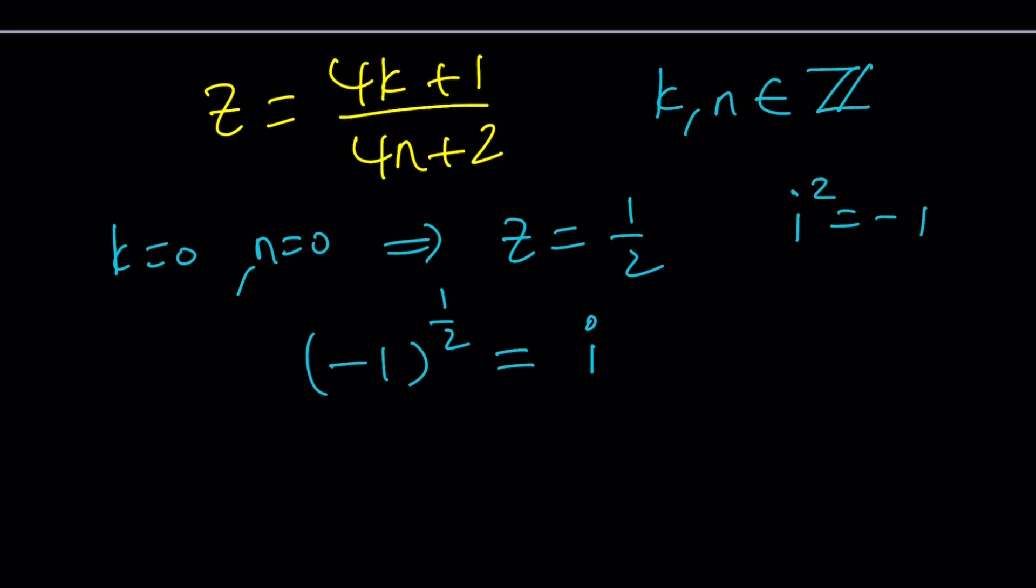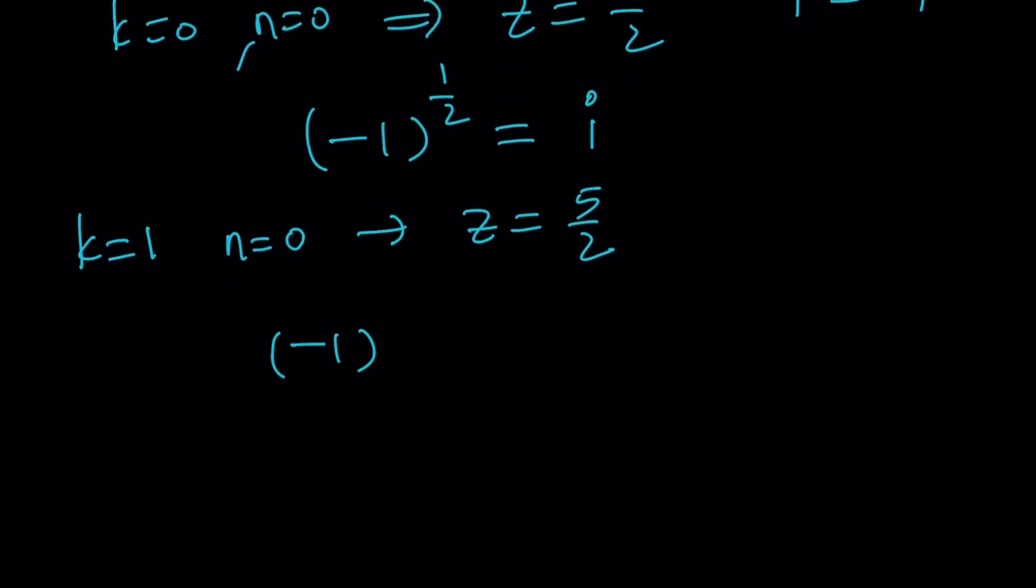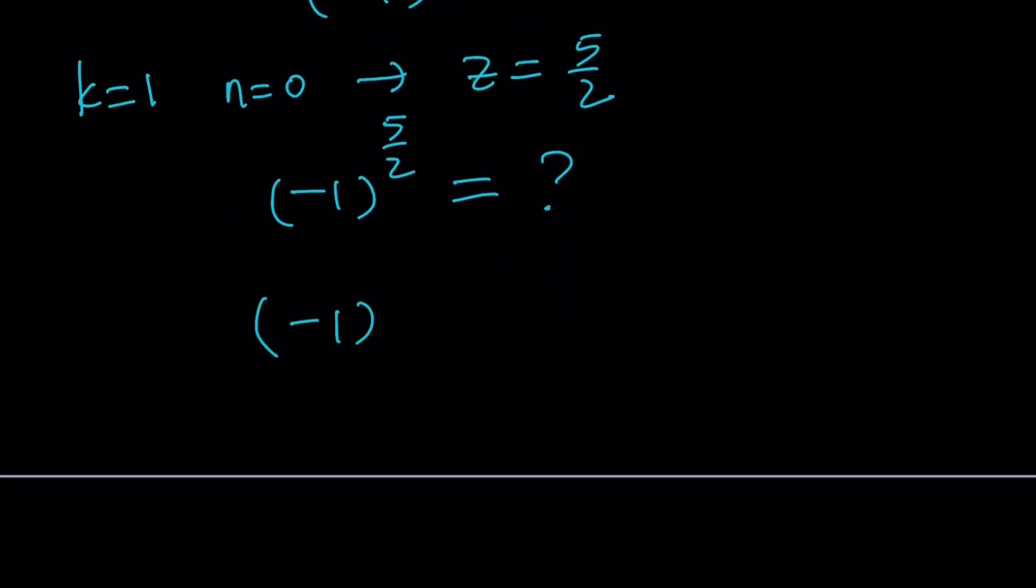So if we use different values for example what if k is equal to 1 and n is equal to 0? From here we get z equals 5 over 2. So do you think if I raise negative 1 to the power 5 halves that'll be i? Let's find out. Negative 1 to the power 5 halves can be interpreted in two different ways. I can think of it as first raise negative 1 to the fifth power and then to the power 1 half because 5 and 2 have no common factors so I'm allowed to take it out.